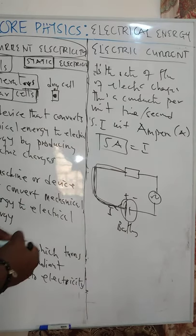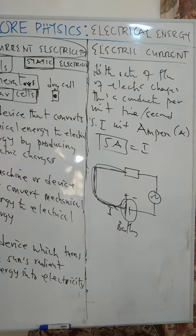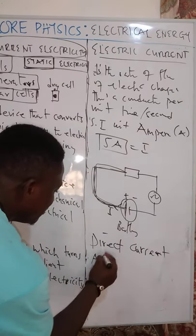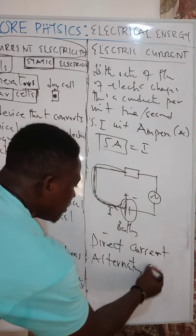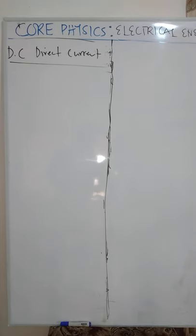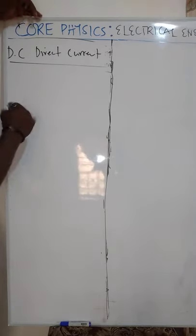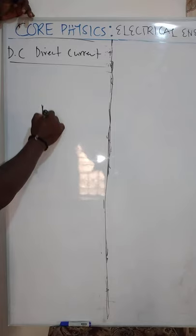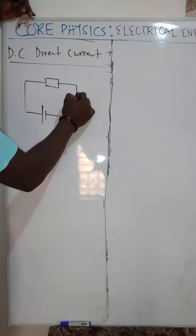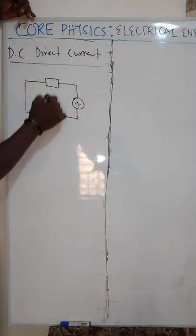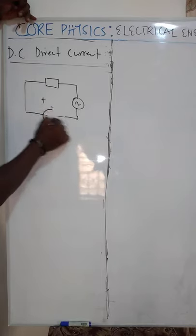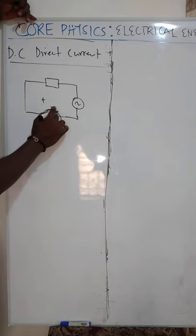Talking about current, we have two types of current. The first type is direct current and the second is alternating current. For direct current, I'll use an electrical circuit to represent this — let's say I have a cell connected to a resistor and a bulb. This is positive and this is negative. I'll label it DC — that is direct current. For direct current, one side is positive and the other side is negative, just like a cell.